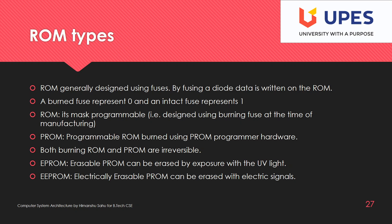The correct term is to 'burn' a particular fuse. This writing method categorizes types of ROM. The first type — mask programmable ROM — is designed one time by the manufacturer only. You provide the data you want stored, and the manufacturer produces that ROM by selectively fusing Zener diodes.